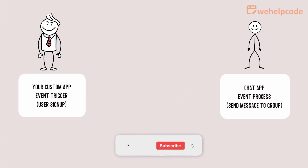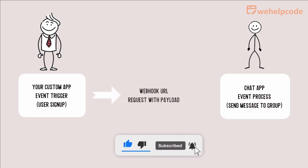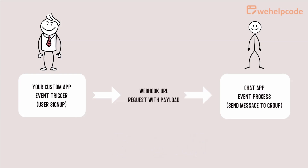To summarize, an event is triggered when a user signs up in your custom app. It will send an HTTP request with the payload to the webhook URL. When the chat app receives the request with the payload, it will then send a message to the chat group.